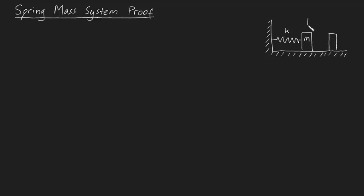So at some time t, let's say this block is at a position x from its equilibrium position. It turns out this is all we need to draw a free body diagram of what's going on. So let's get started.